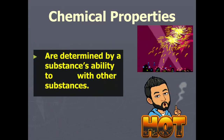Chemical properties are the second type, and they are determined by a substance's ability to react with other substances. So it's described in terms of its reactability with other things.